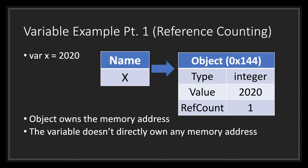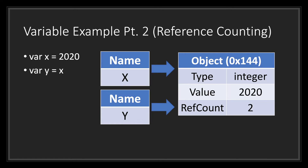As you can see, the memory layout is different from the C language. Instead of X owning the block of memory where the value 2020 lives, the newly created object owns that memory — the name X doesn't own any memory address. Since Godot uses reference counting, as long as the object has a reference count greater than zero, the object will continue to exist in memory. Let's create a new variable Y which will equal X.